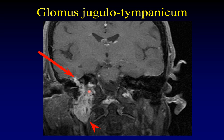There's a tail of enhancing tumor extending out into the middle ear cavity — in this case filling the middle ear cavity and heading intracranially through there. This is a very large glomus jugulotympanicum tumor.